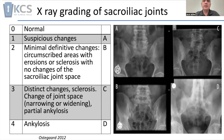Changes in the joint space, either narrowing or widening, and partial ankylosis, as seen in image C, and full ankylosis, as seen in image D.